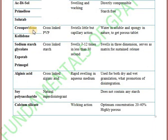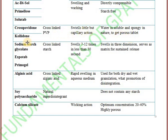Next ones are crospovidone and Kollidon. These are derivatives of polyvinyl pyrrolidone, so their nature is cross-linked polyvinyl pyrrolidone. The mechanism involved is swelling due to capillary action when they come in contact with water, causing them to burst the tablet. They are water-insoluble and spongy in nature, producing a porous tablet after disintegration.